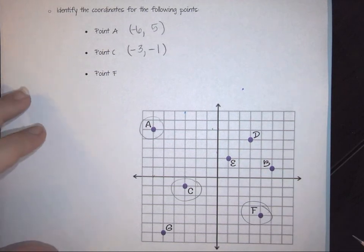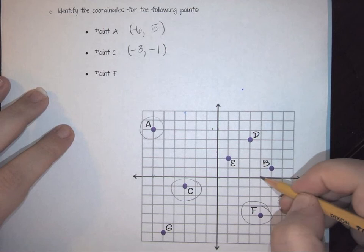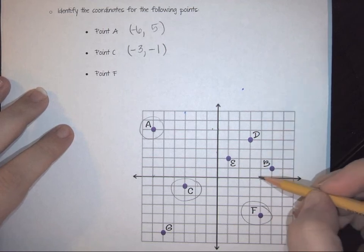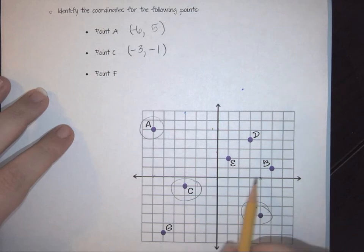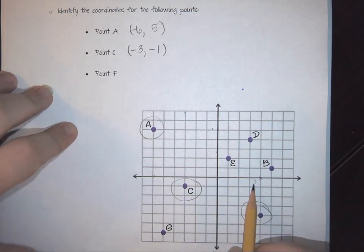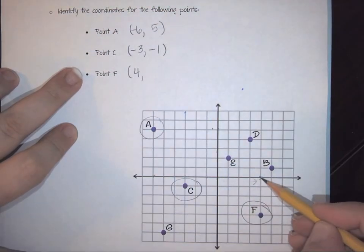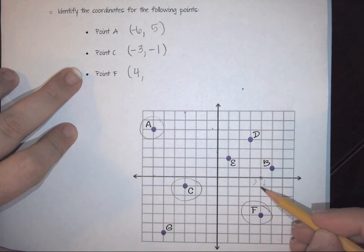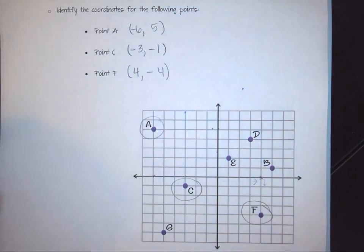For point F, we go from our point up to the x-axis and count from the origin: one, two, three, four. Since I went in the right direction it's positive, so we start with four. Then from here I go down: one, two, three, four — because it's down, it's negative. So point F is (4, negative 4).